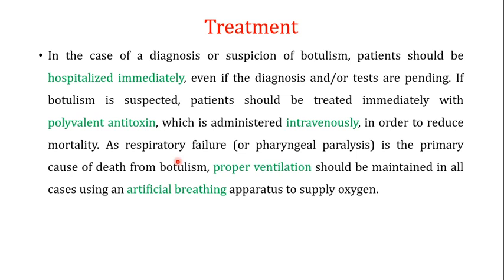Respiratory failure or pharyngeal paralysis is the primary cause of death from botulism, so proper ventilation should be maintained in all cases using an artificial breathing apparatus to supply oxygen. There should be a supply of oxygen to the patient, and if ventilation is needed, a proper ventilator should be available so that in case the patient's condition worsens, oxygen can be supplied to reduce chances of death.